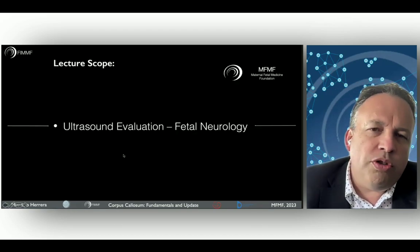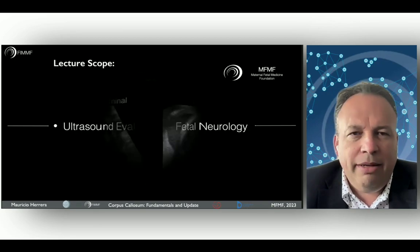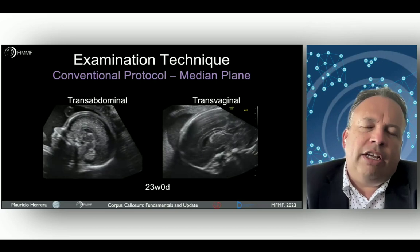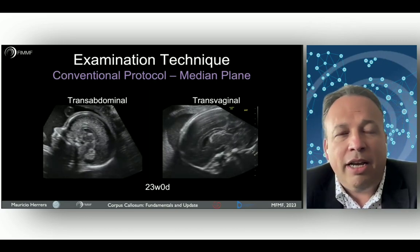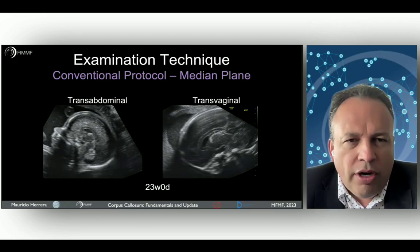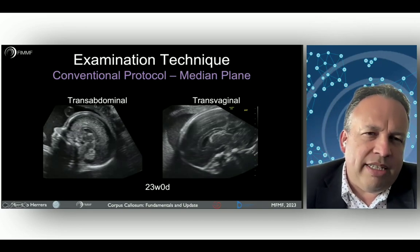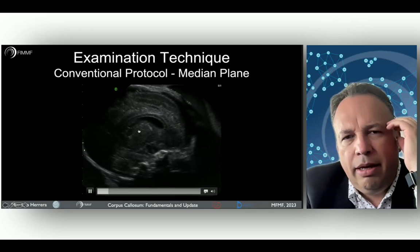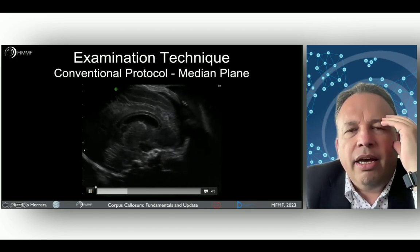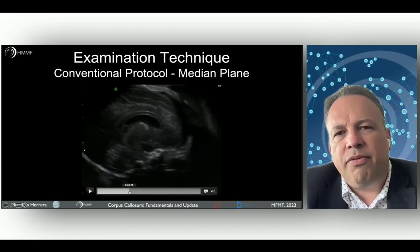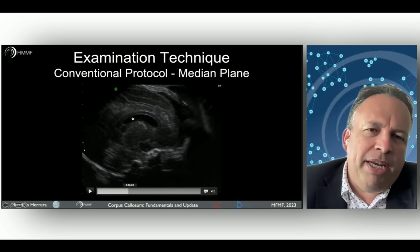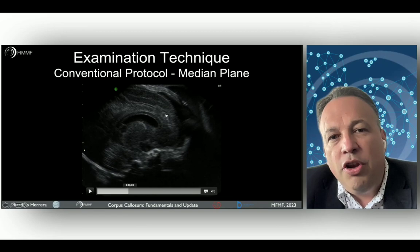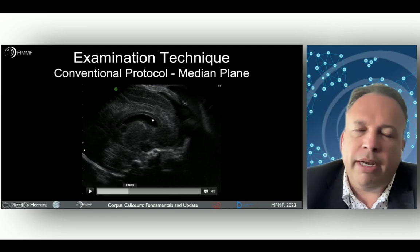The next important point is the ultrasound evaluation of the corpus callosum. It is important to take into account the latest ISUOG guidelines and the conventional protocol in the median plane, the axial plane, and also the coronal planes when needed. You can use the transabdominal approach and also the transvaginal approach. The typical appearance in the midline shows the hypoechoic appearance of the corpus callosum surrounded by a hypoechoic sulcus, with the normal cingulate sulcus visible in correlation with the normal development of the corpus callosum.